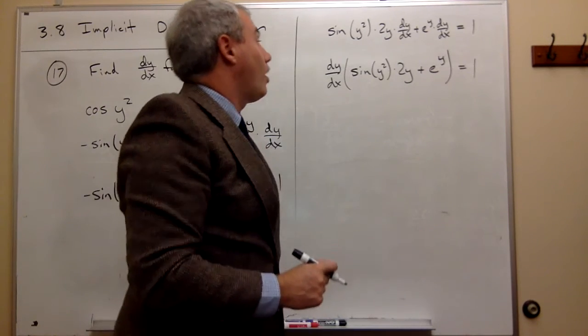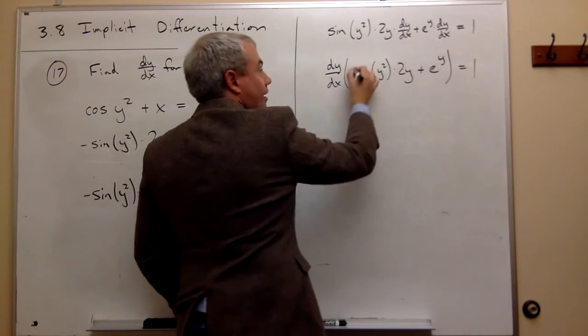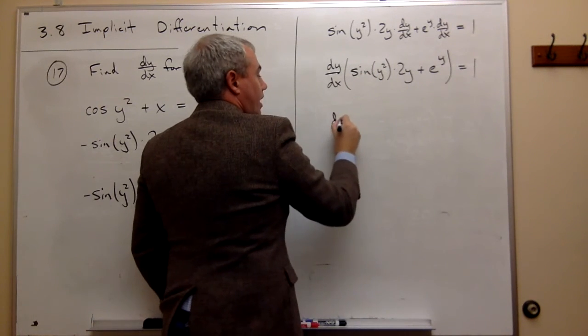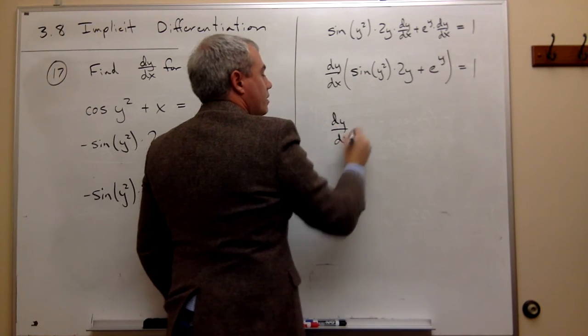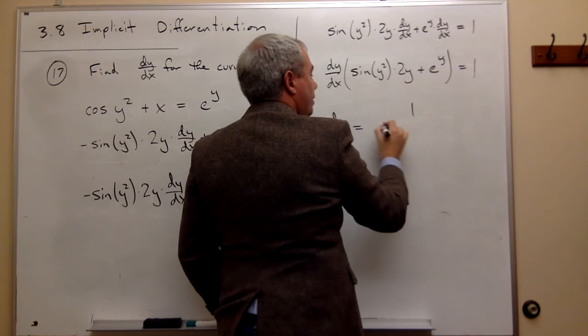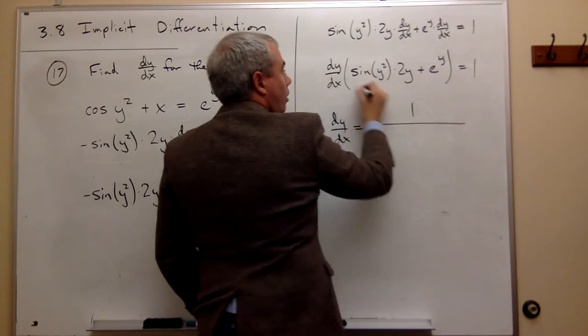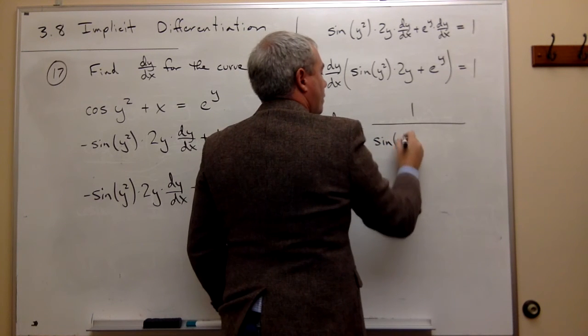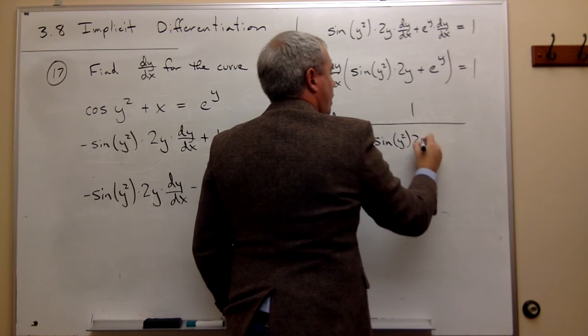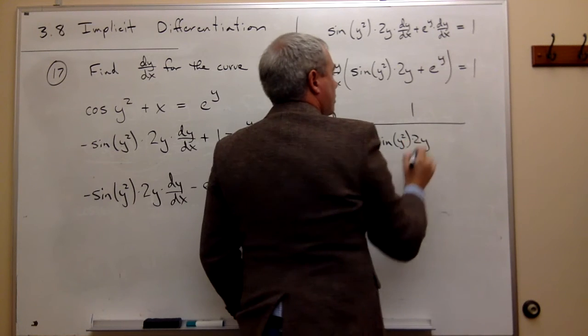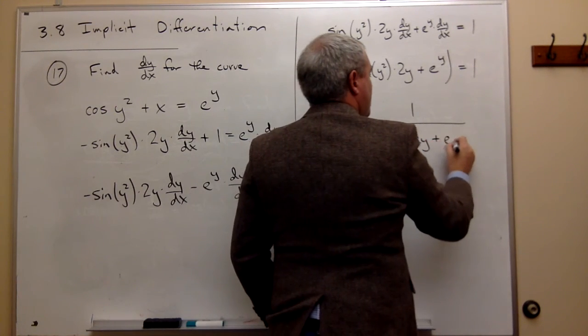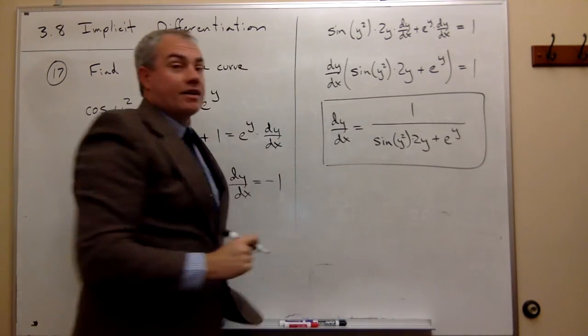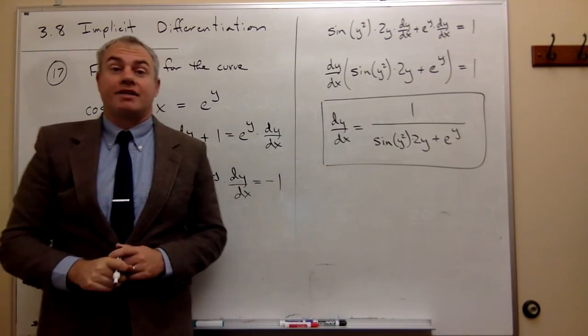Now all I need to do is divide both sides by this big mass in the parentheses. And I have dy/dx equal to 1 divided by all of this: sin(y²) times 2y plus e^y. And that is the form of dy/dx.